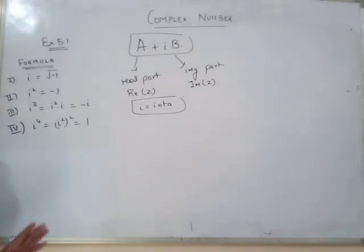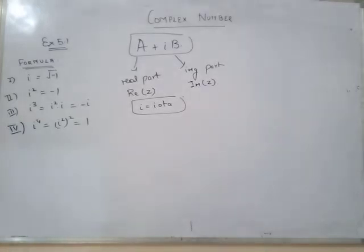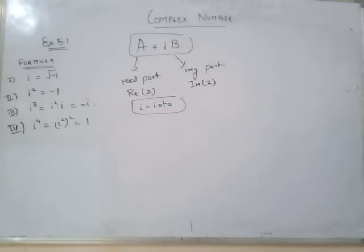You can see the four formulas. Iota equals root of minus 1. Iota squared equals minus 1. Iota cubed value is minus iota. Iota to the power 4 value is 1.